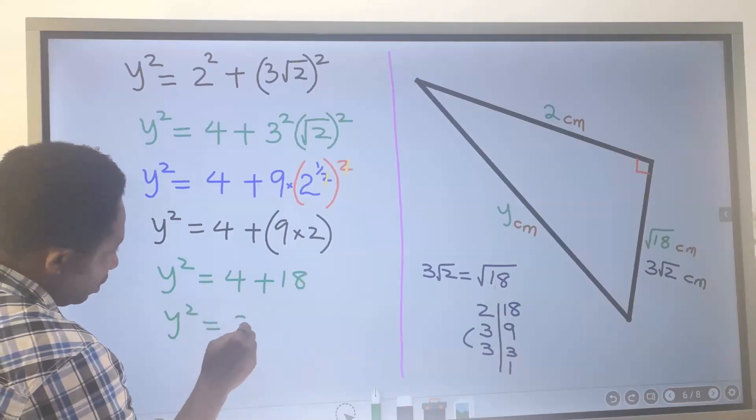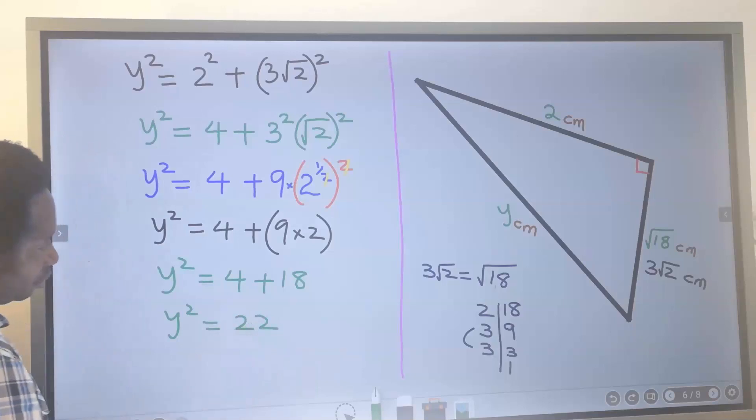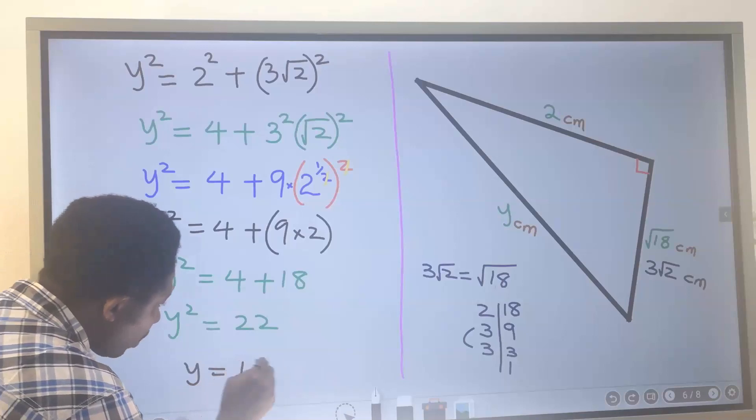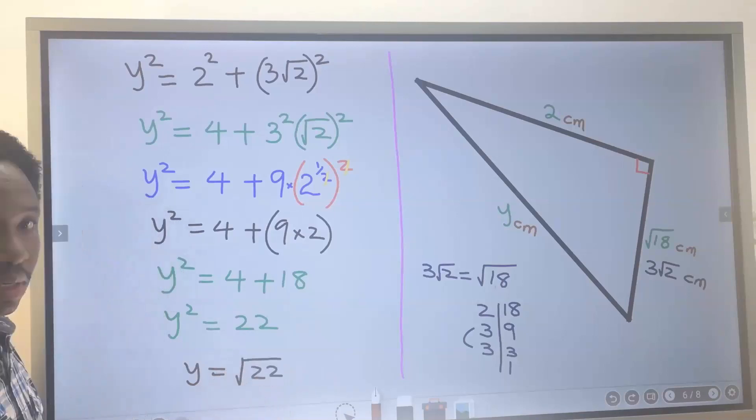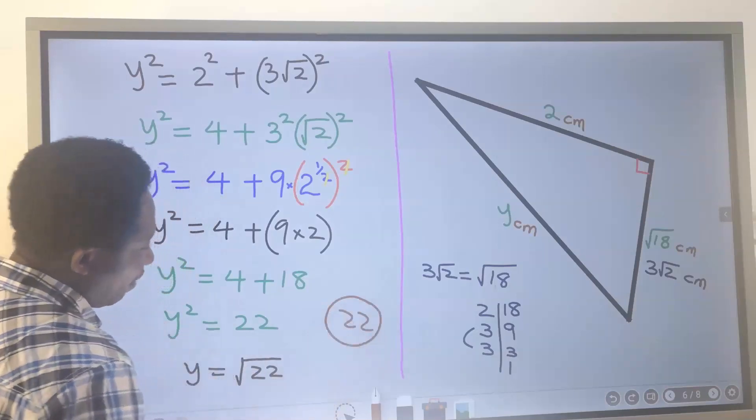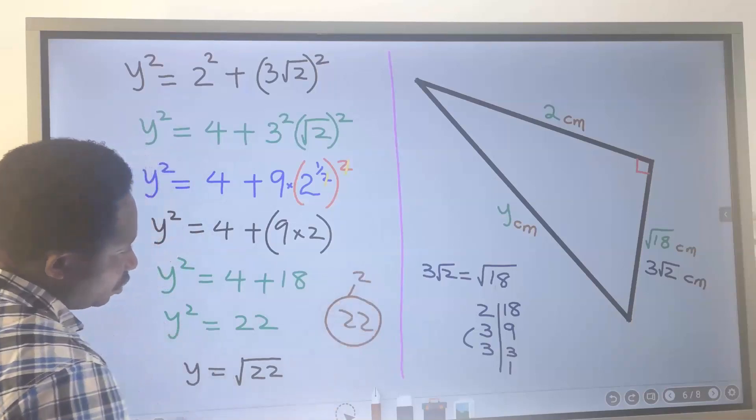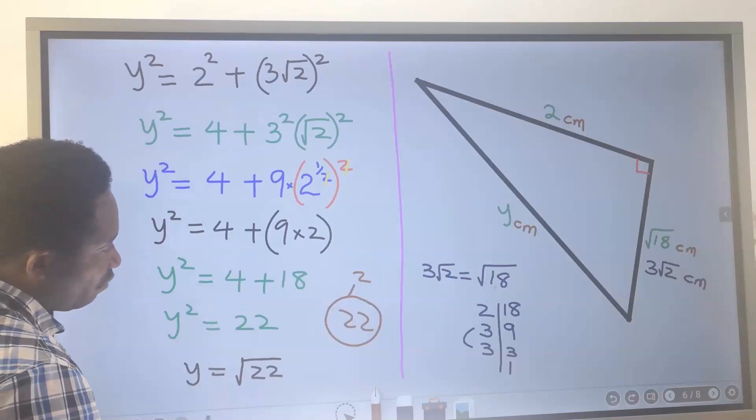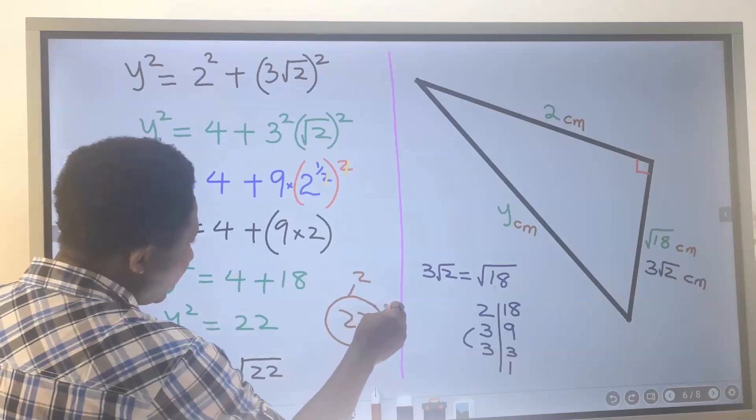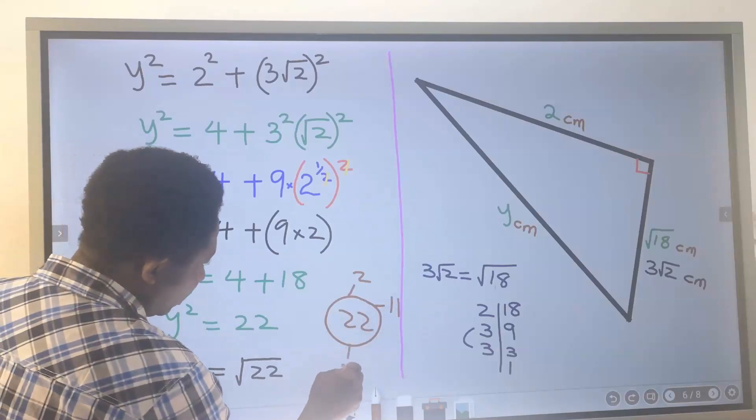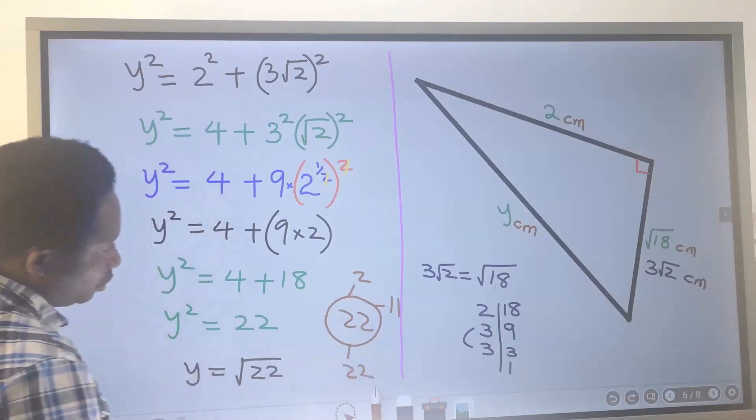Here our y is now the square root of 22. Next let's try to break down 22 into its factors. 2 can go into 22 without a remainder. 3 cannot go, 4 cannot go, but 11 can go into 22 without a remainder. 22 can also go into 22 without a remainder.